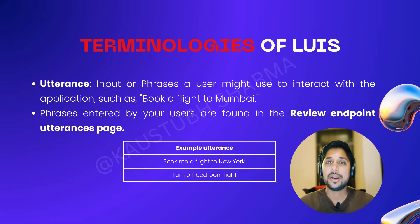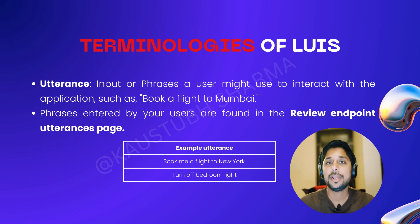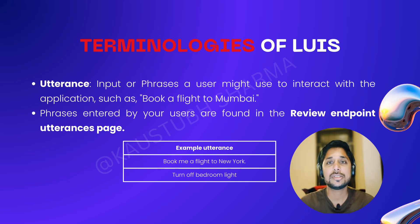Let's understand some important LUIS terminologies. First up, we have utterances. Utterances are the actual phrases or sentences users input into the system. LUIS uses these utterances to train its model and improve its ability to recognize what users want to say accurately. The more diverse and numerous the utterances, the better LUIS becomes at understanding different ways users express themselves.